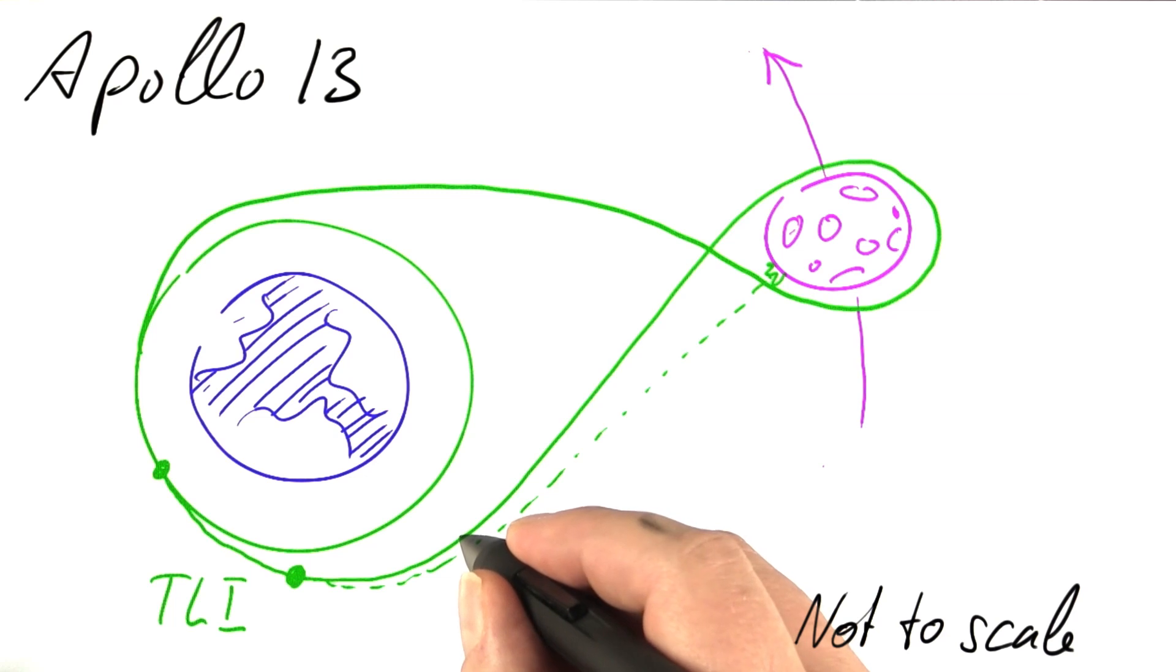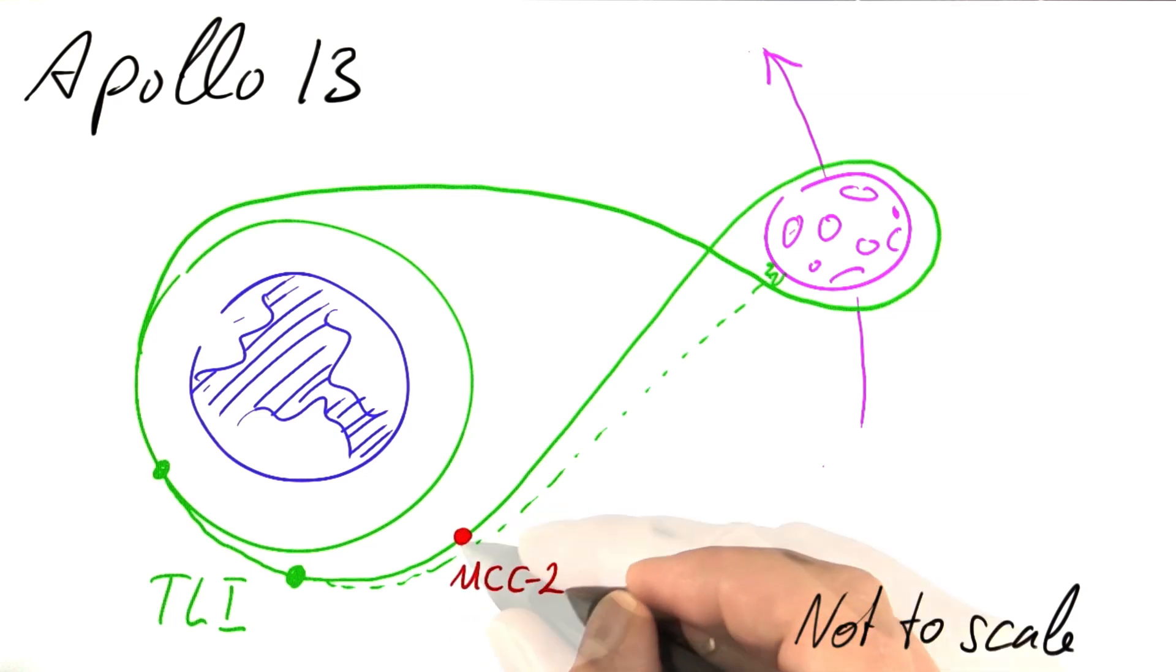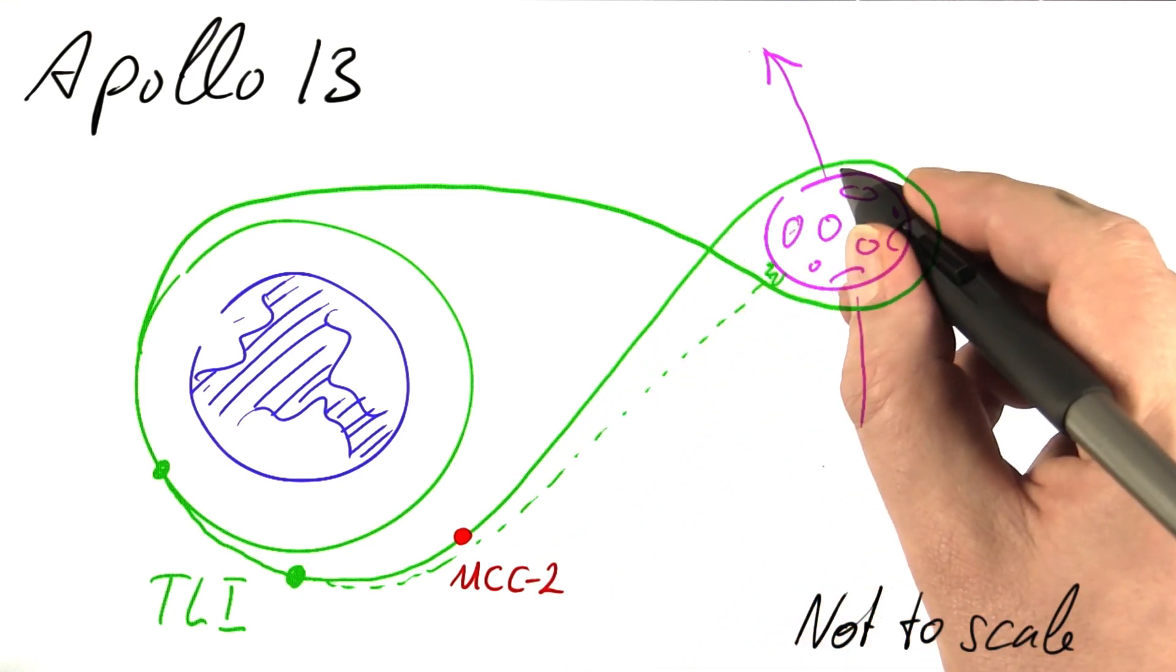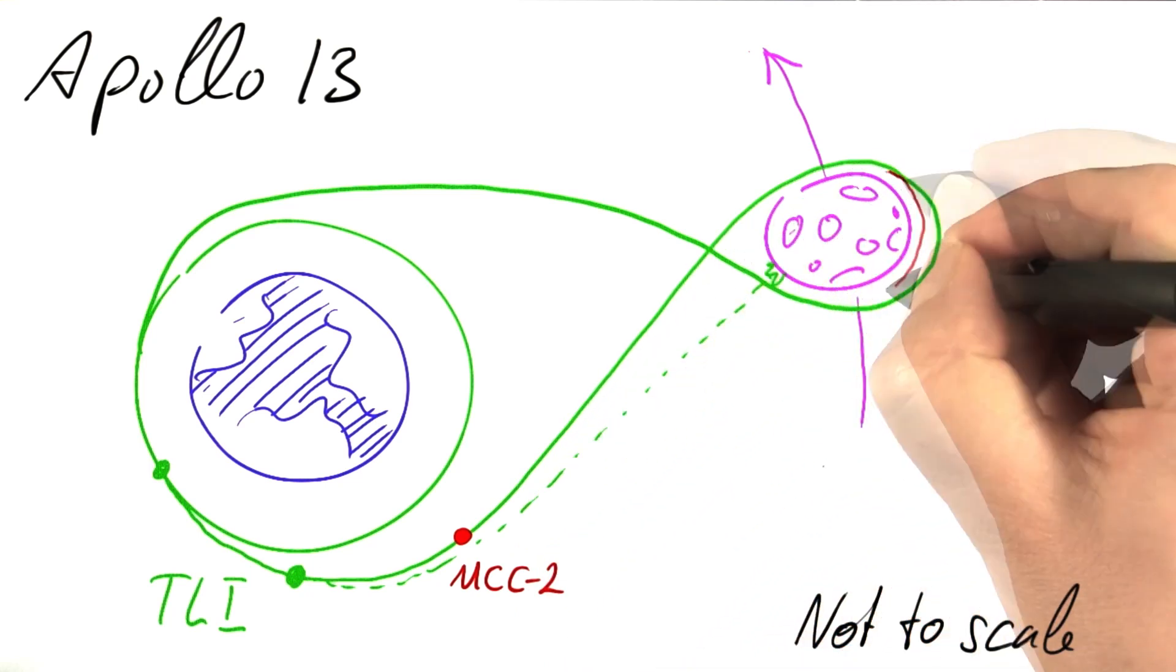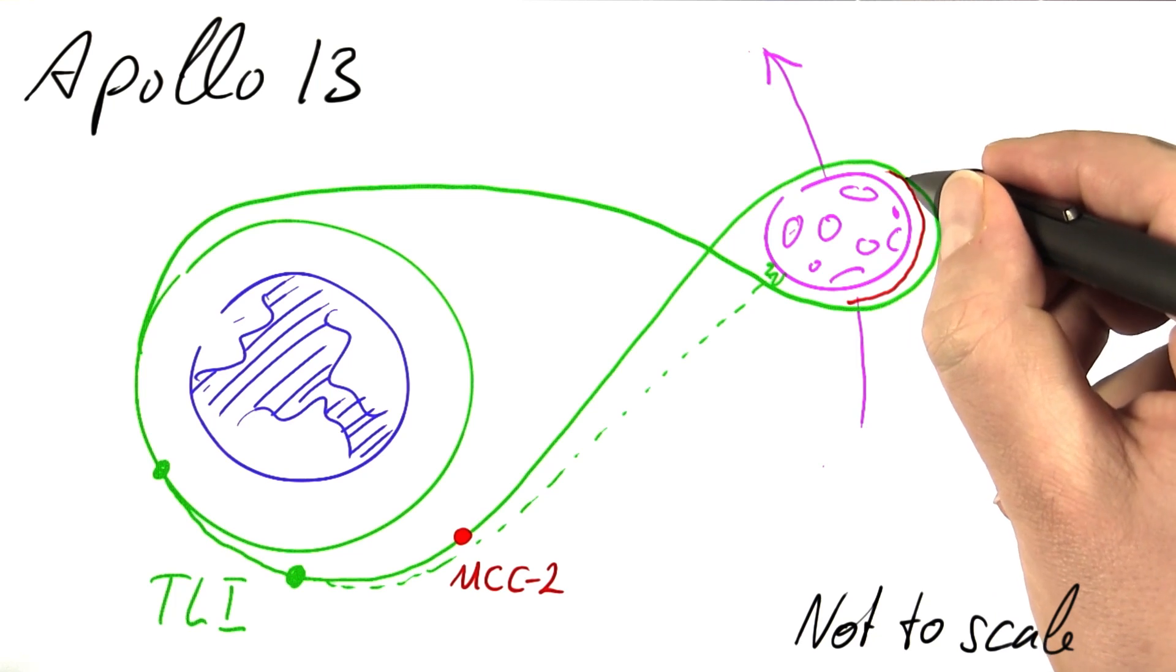The second thing was planned as well, a mid-course correction, MCC. The objective was to take the spacecraft to a trajectory that's closer around the Moon, but there was a price to pay.